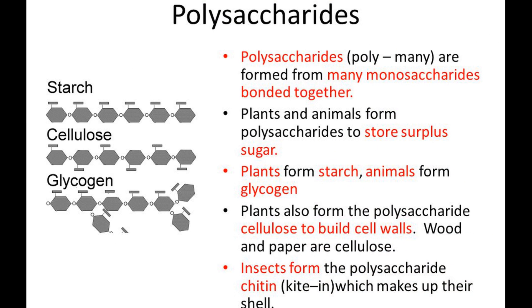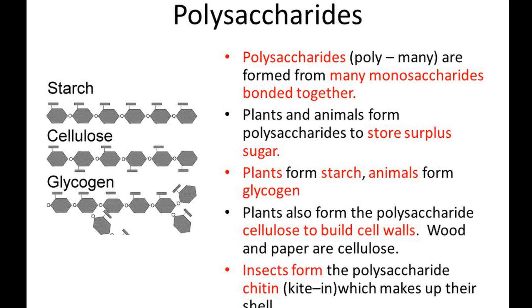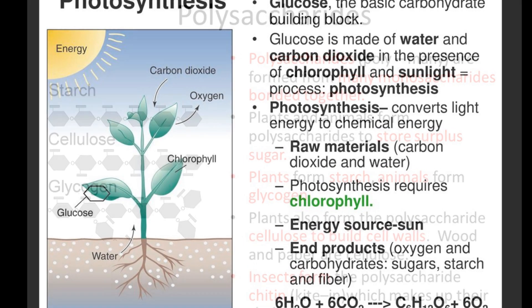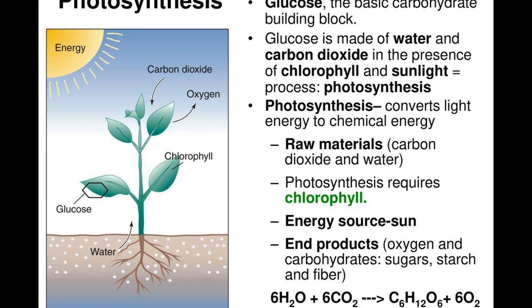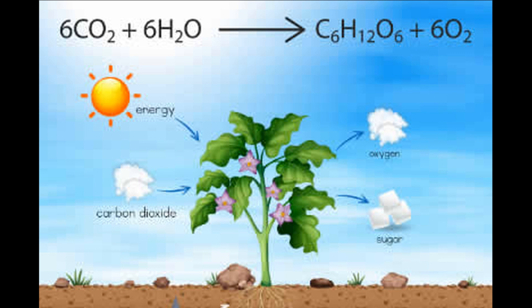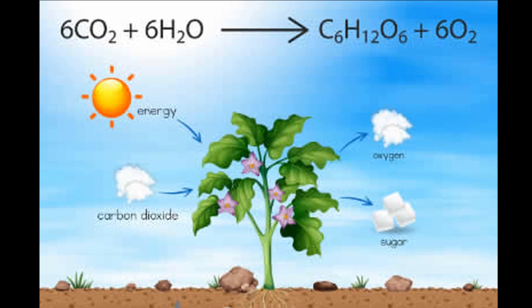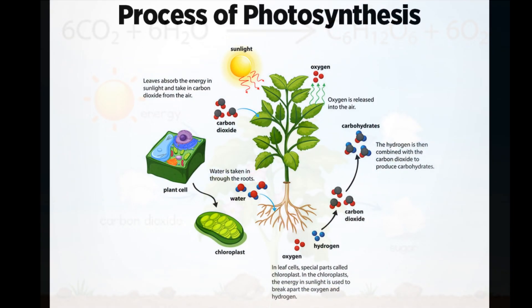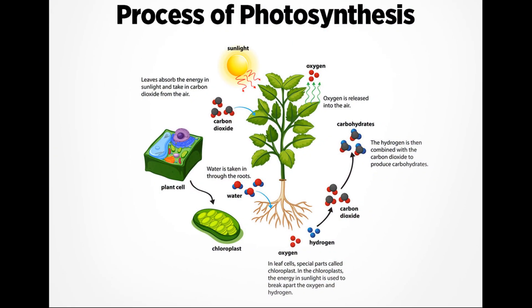These plants first form simple soluble carbohydrates, that is glucose, and later form complex insoluble carbohydrates, that is starch, in the presence of sunlight and chlorophyll with the help of water and carbon dioxide. As this process is carried out in the presence of sunlight, it is known as photosynthesis.